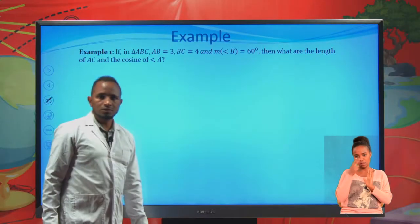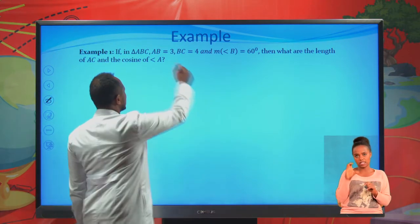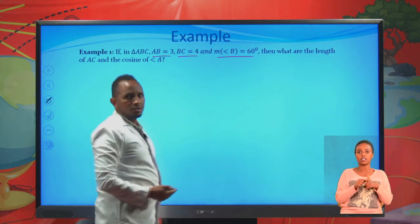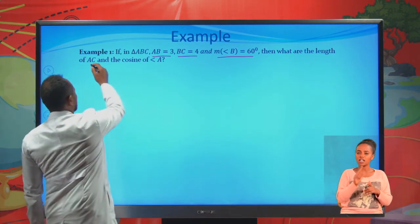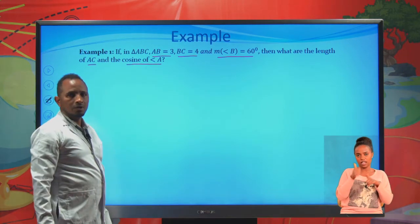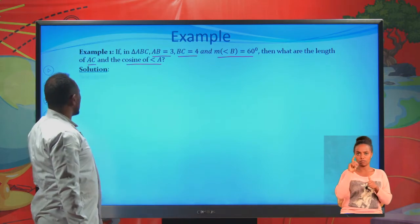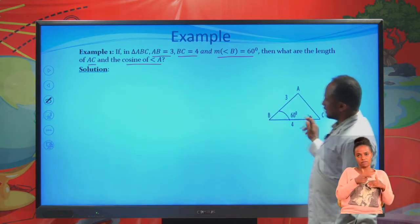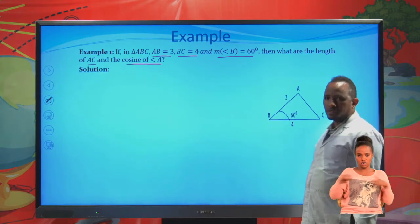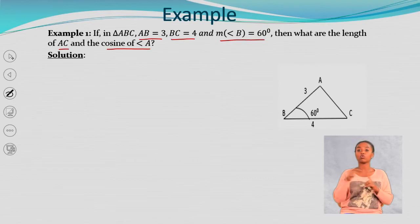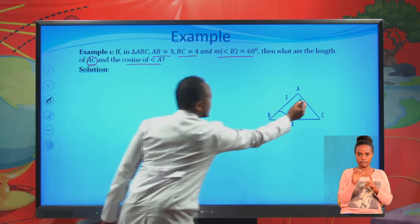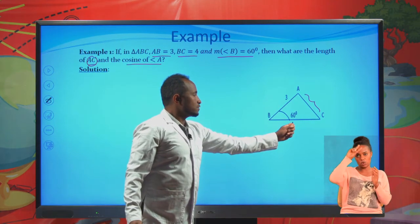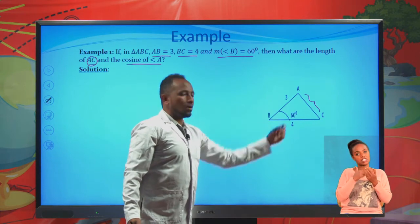Example: Triangle ABC is given with side AB equal to 3, side BC equal to 4, and the measure of angle B equal to 60 degrees. We are asked to find the length of AC and the cosine of angle A. To solve this, first we draw the triangle. Using the cosine law, AC squared equals AB squared plus BC squared minus 2 times AB times BC times cosine 60 degrees.